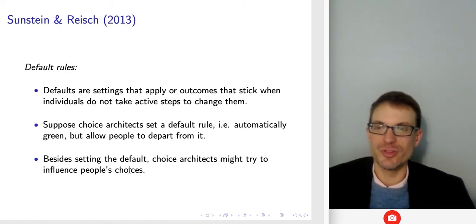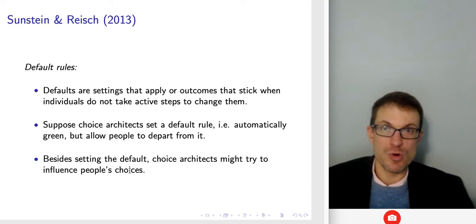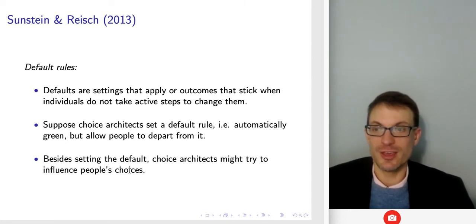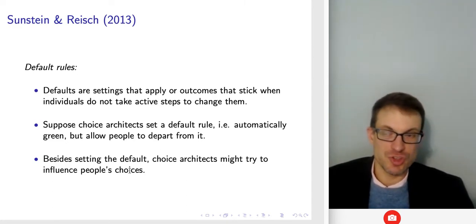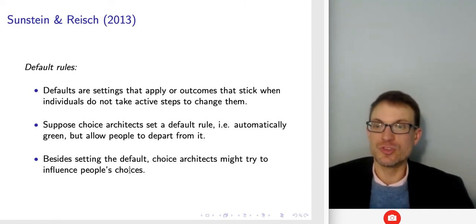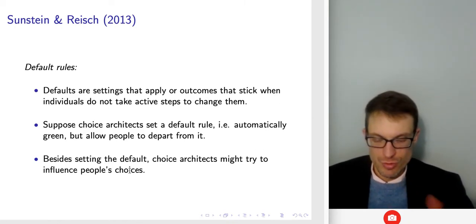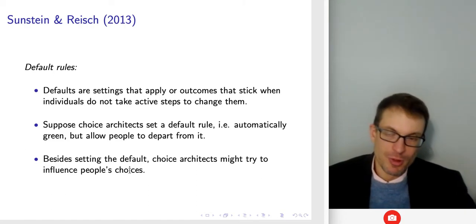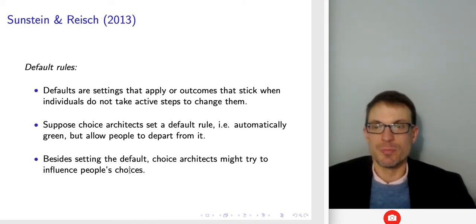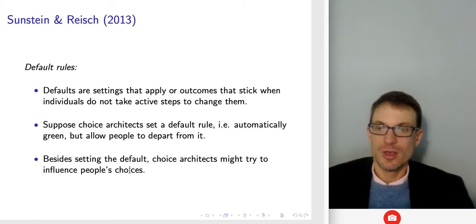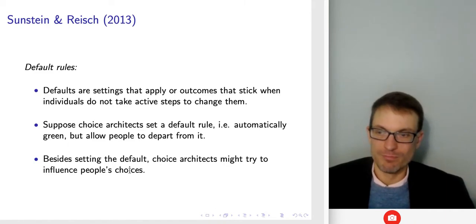Default rules are the settings that apply or outcomes that stick when individuals don't actively change them. Suppose the choice architects set up a default rule — automatically green, for instance — choosing the green option, and then people are able to depart from it by opting out. That would be an example of setting a default rule.